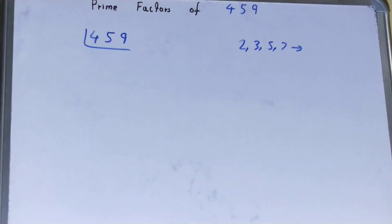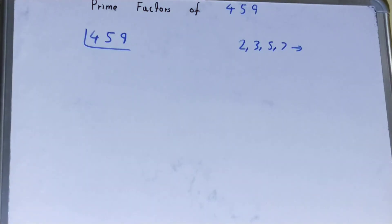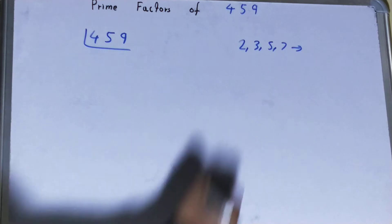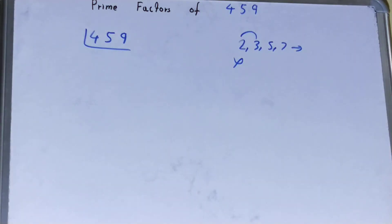So what we'll do is start with the lowest prime number we have, that is two. Is the number 459 divided by two? The clear answer is no because it is an odd number. So we'll go to the next lowest prime number, that is three. Is the number 459 divided by three? Let's check.